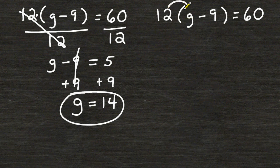So we are going to start by multiplying 12 times g which is 12g. And then we multiply 12 times the other term inside our parentheses or 12 times 9 which is equal to 108. And that is still equal to 60.